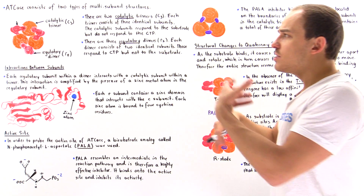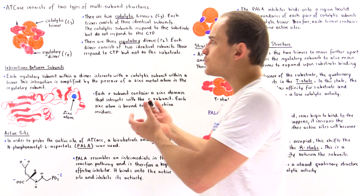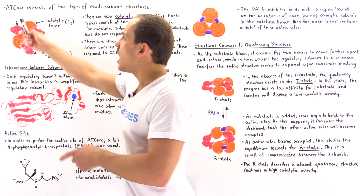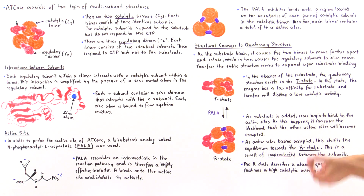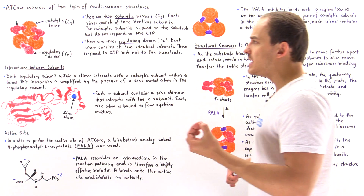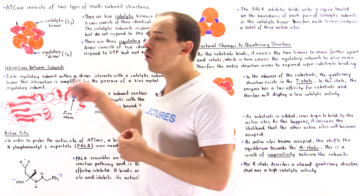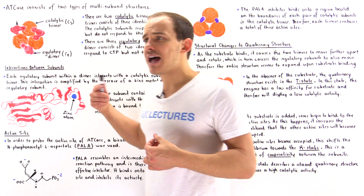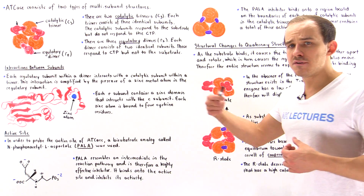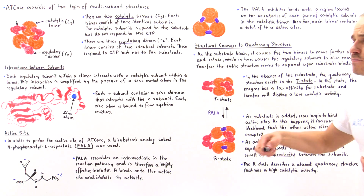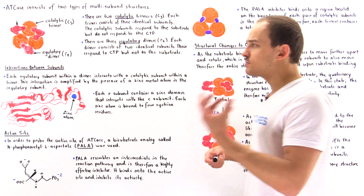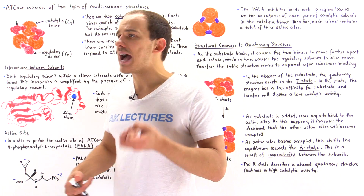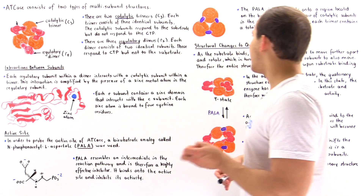The PALA inhibitor binds onto a region located on the boundaries of each pair of catalytic subunits in any one of those catalytic trimers. Because there are three such boundaries between pairs in any given trimer, we see three active sites per trimer, and because we have two trimers, that implies we must have six active sites total.